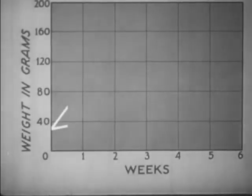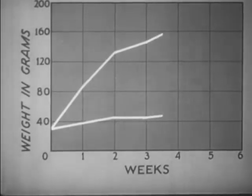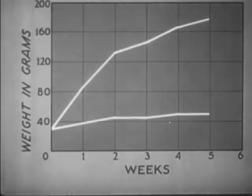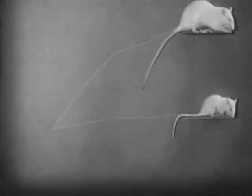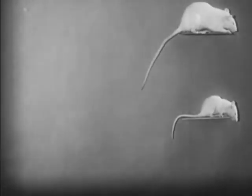We shall feed one of these young rats a normal diet and the other a diet too low in protein. Note the difference in the rate of growth. After five weeks, the one on the low protein diet is stunted, weak, and diseased.